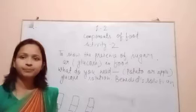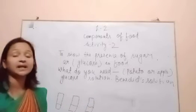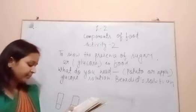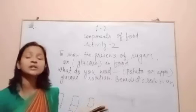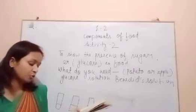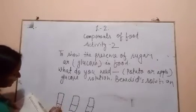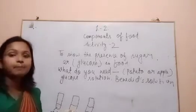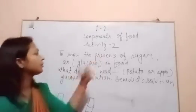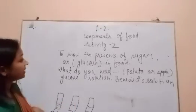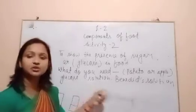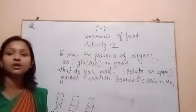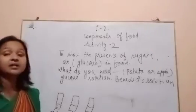What do you observe? You will observe that the test tube containing crushed apple and glucose solution turns into red precipitate, and no such change occurs in the test tube containing potato. Formation of a red precipitate indicates the presence of sugar. This also shows that potato does not contain sugar.